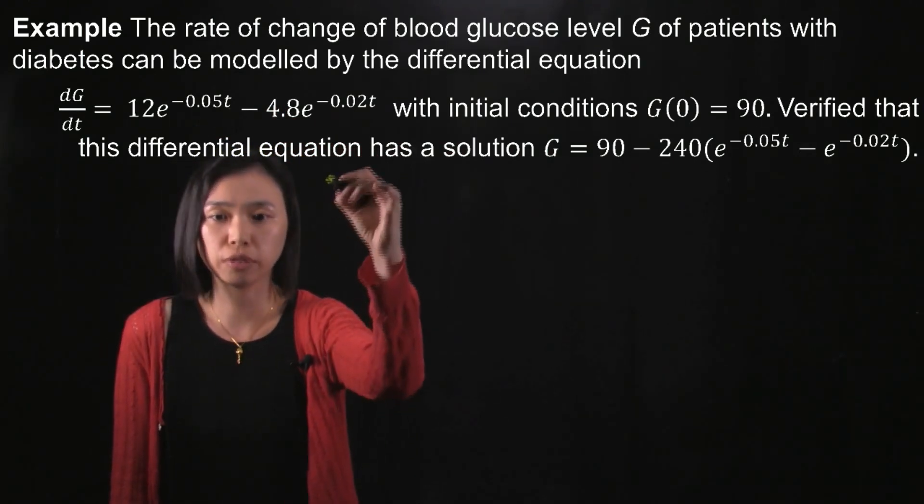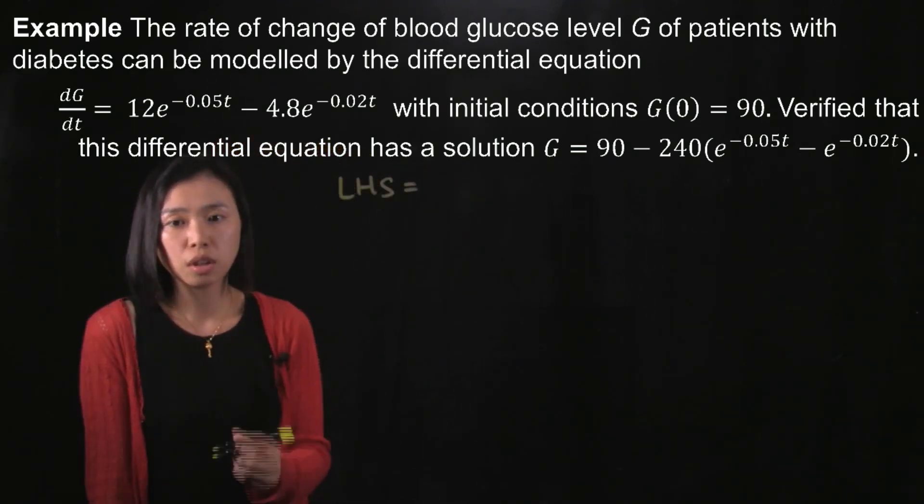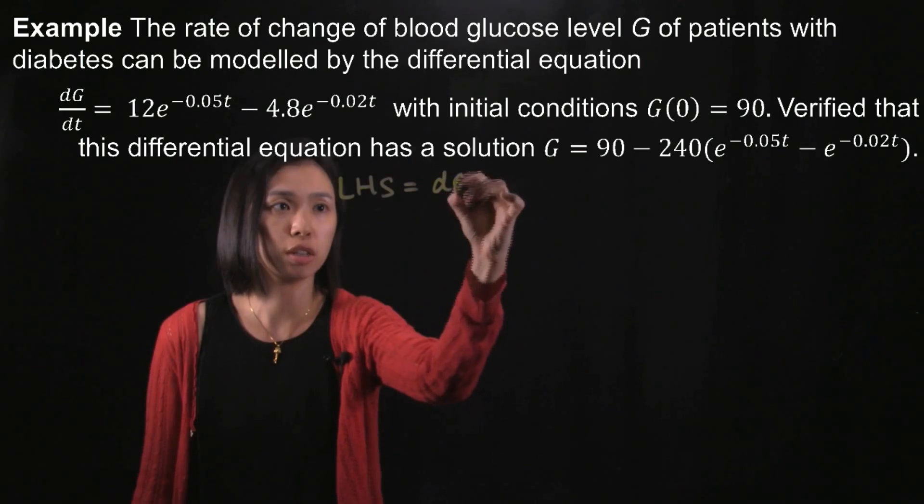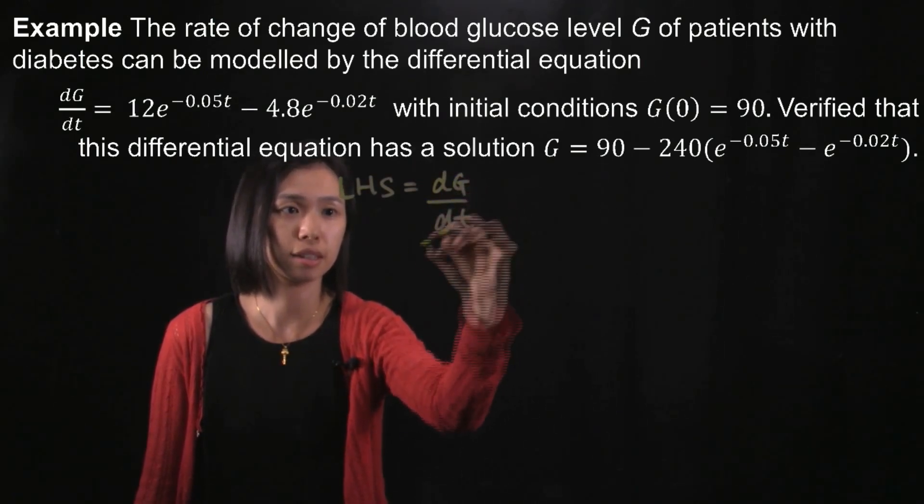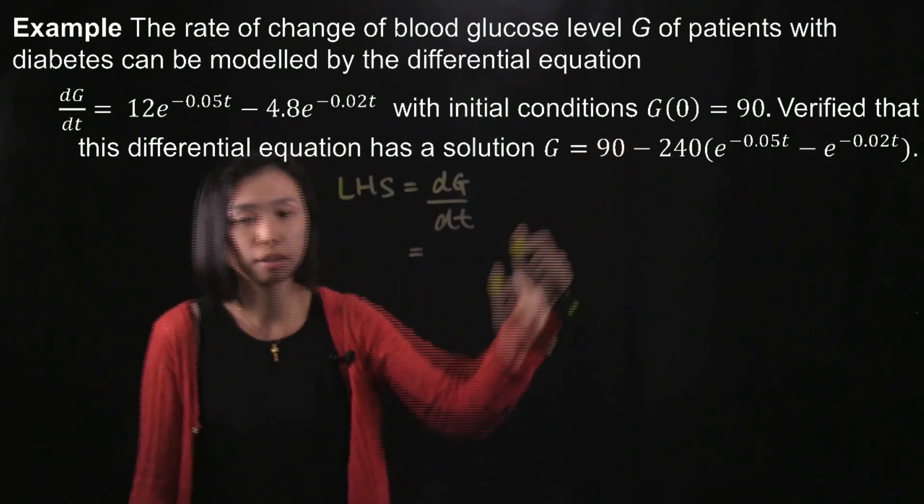Usually what we do is start with the left-hand side of the differential equation. So the left-hand side of the differential equation is dG/dt. Then we look for G. So G is here and then we try to differentiate it.